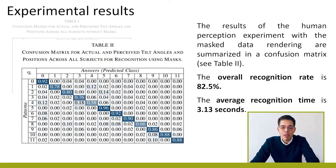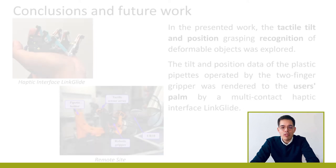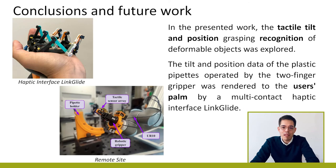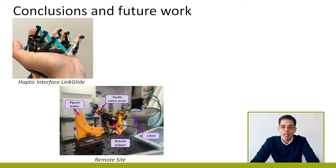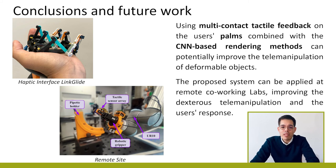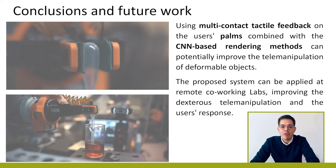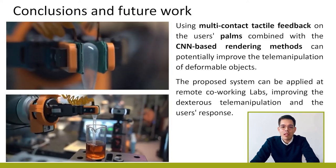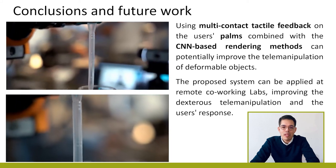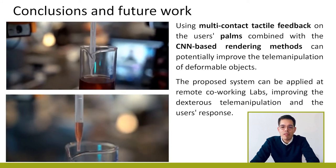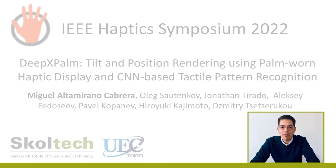Based on the experimental results, we can conclude that using multi-contact tactile feedback on the user's palm combined with the CNN-based rendering methods can potentially improve the tele-manipulation of fragile objects. The proposed system can be applied at remote co-working labs, improving dexterous tele-manipulation and the user's response. For further information, you can consult our paper.